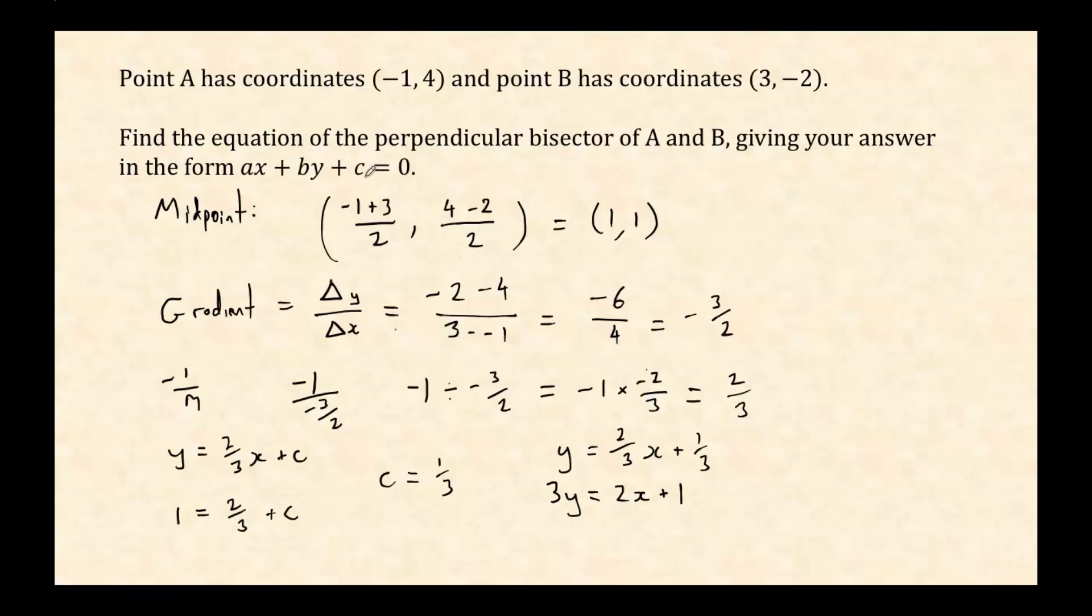Now the final thing is they wanted everything on one side and it equal to zero. So I'm just going to subtract 3y from this side and I've got 2x - 3y + 1. Now it doesn't matter if it's negative because negative 3 is still an integer, but this is a form that you need to get used to a little bit at A level. So just get whatever form you like and then multiply and rearrange until it's in that form.